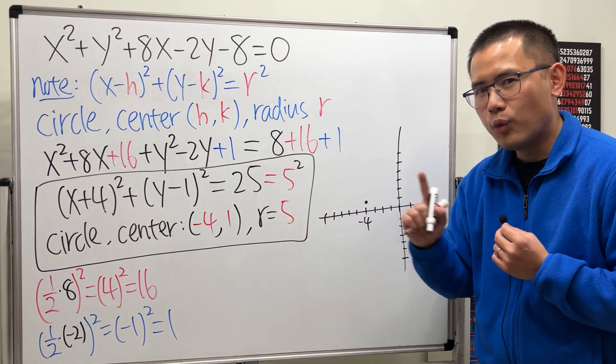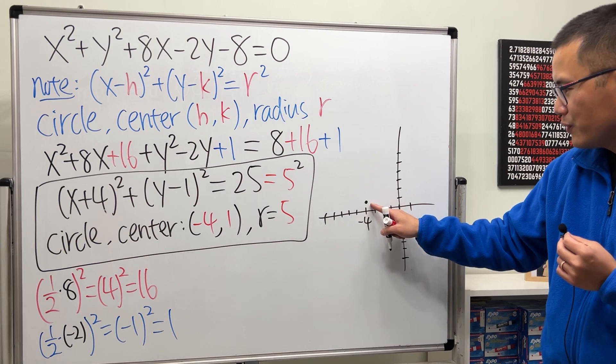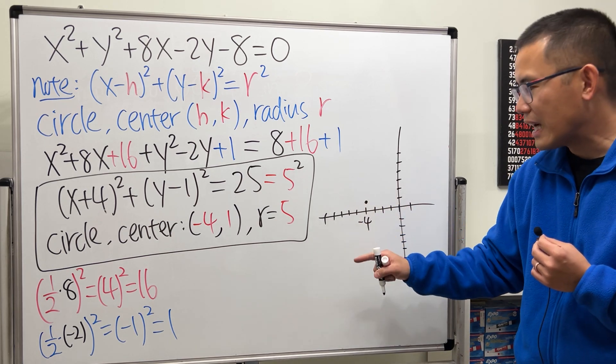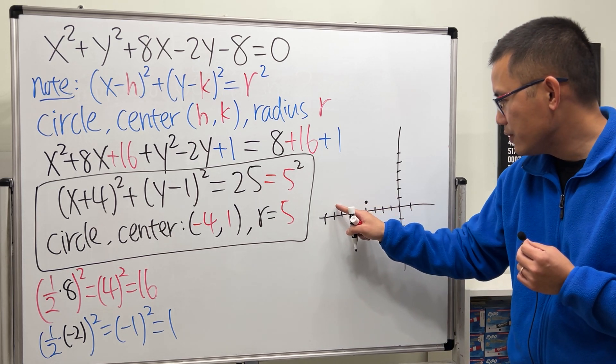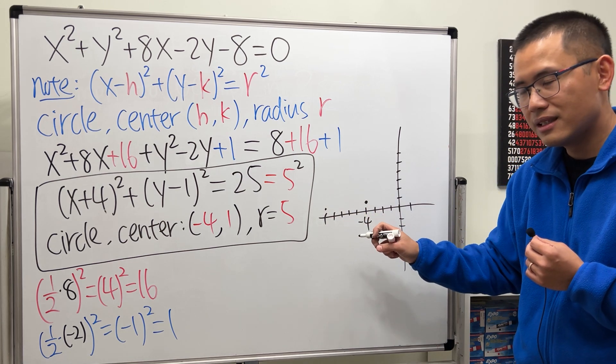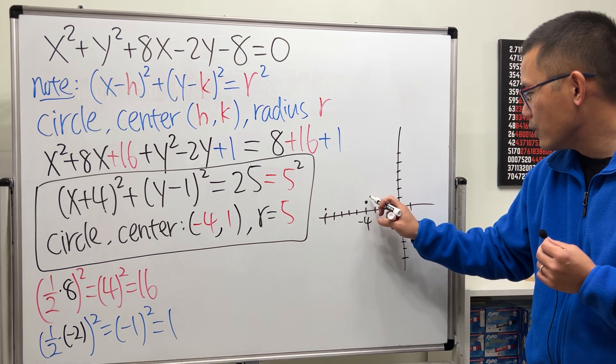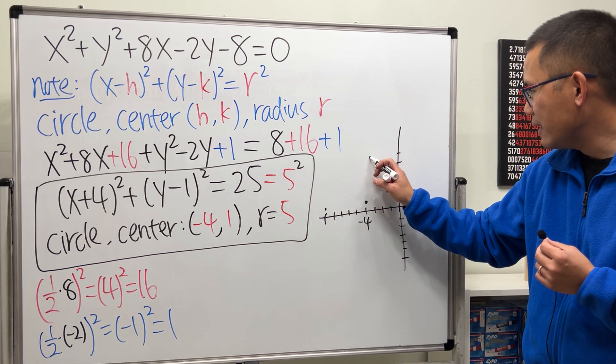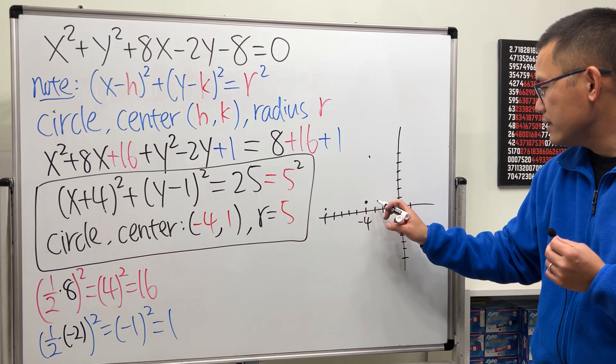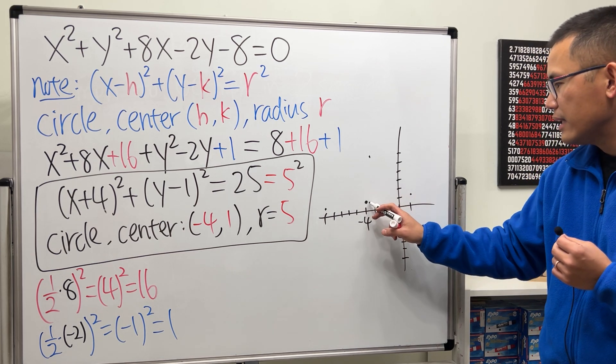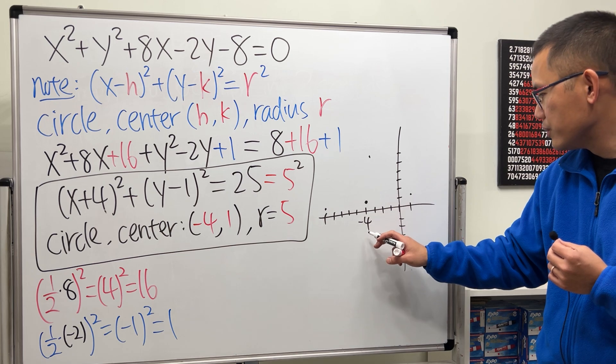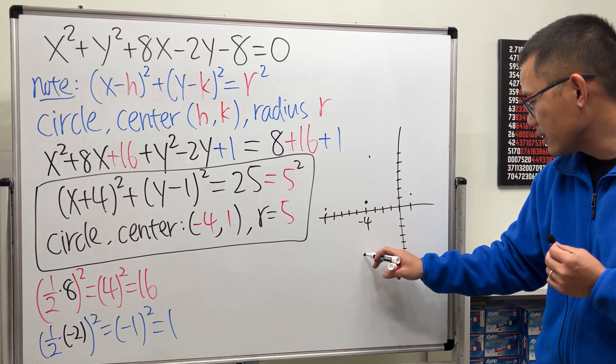Center. For the radius, what we are going to do is, start from the center, move to the left 5 times, 1, 2, 3, 4, 5. Put a dot. Move up 5 times, 1, 2, 3, 4, 5. And then move to the right, 1, 2, 3, 4, 5. And then go down, 5 times, 1, 2, 3, 4, 5. Something like that.